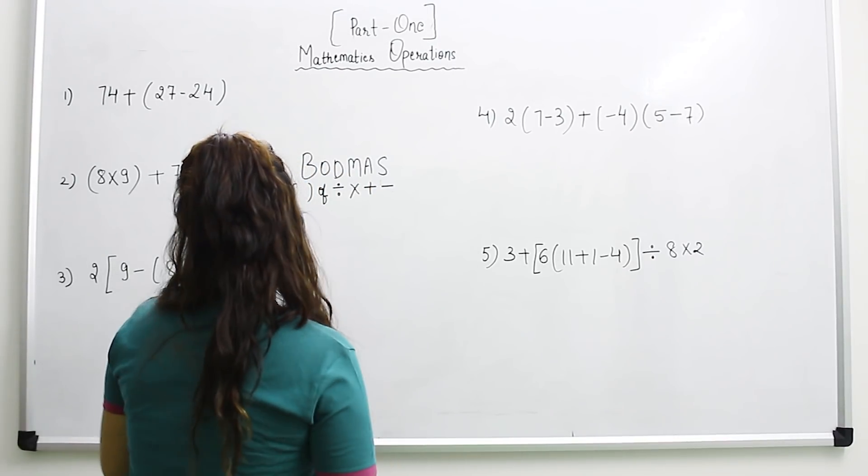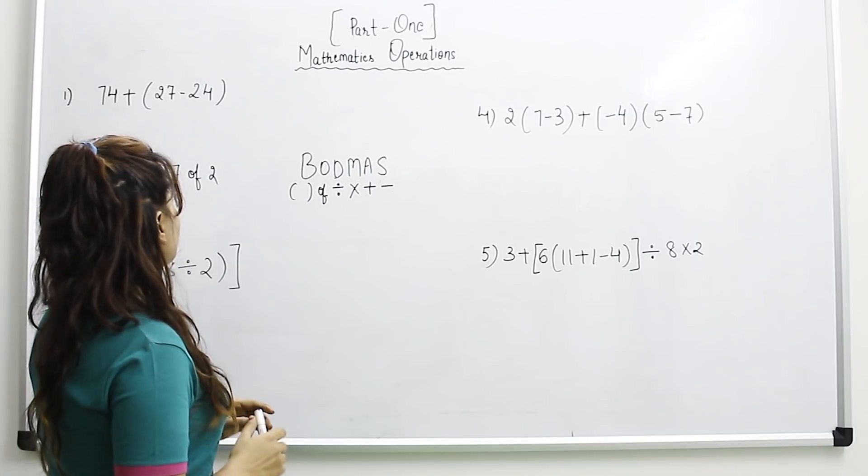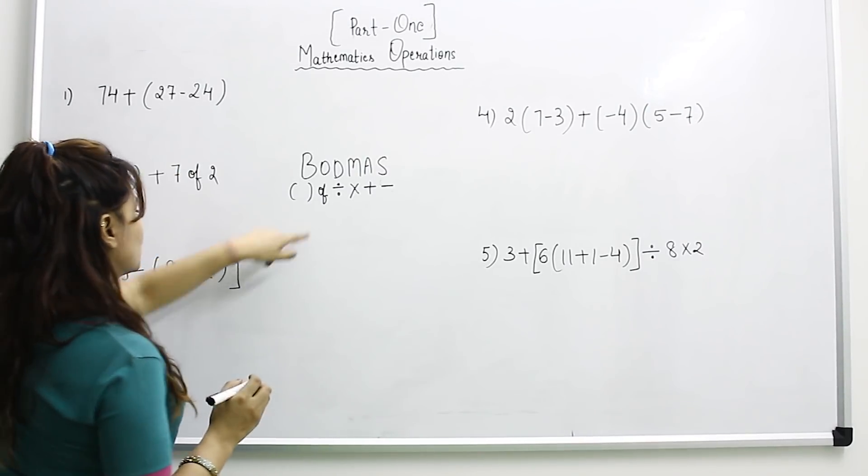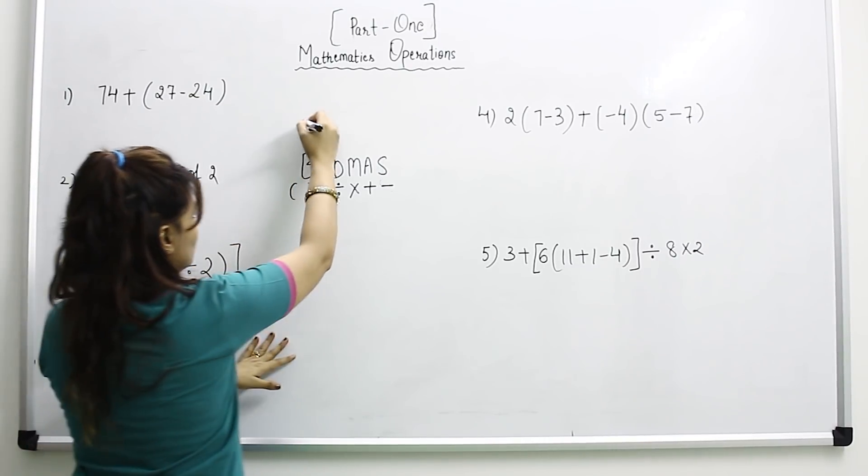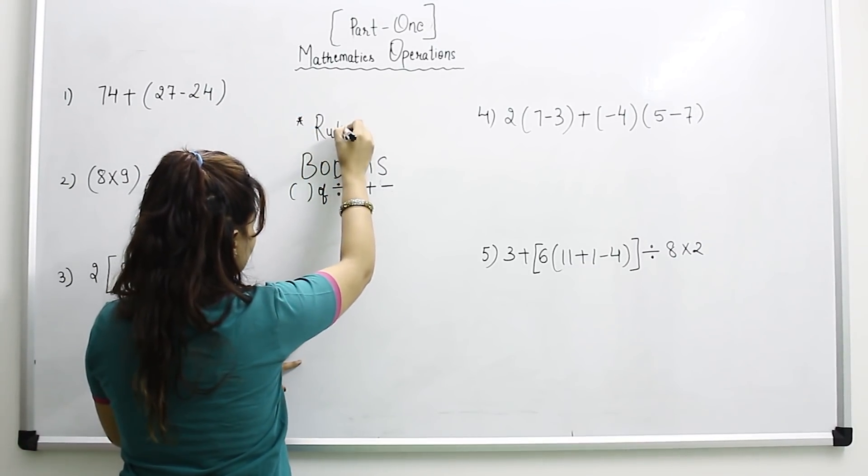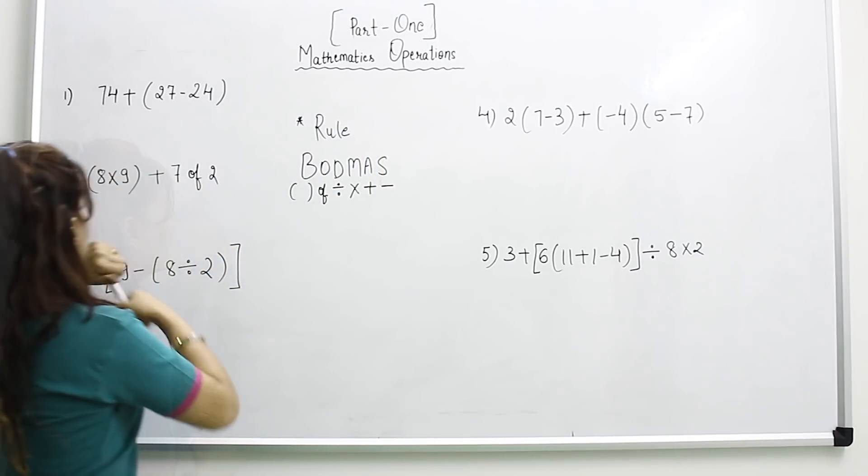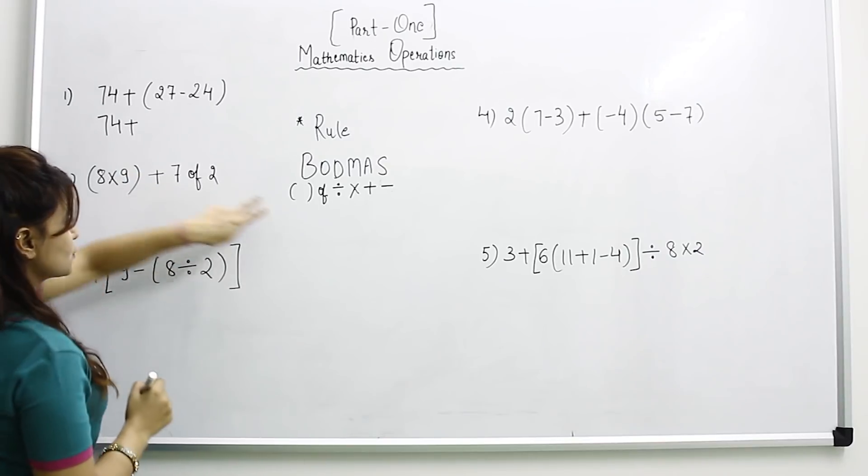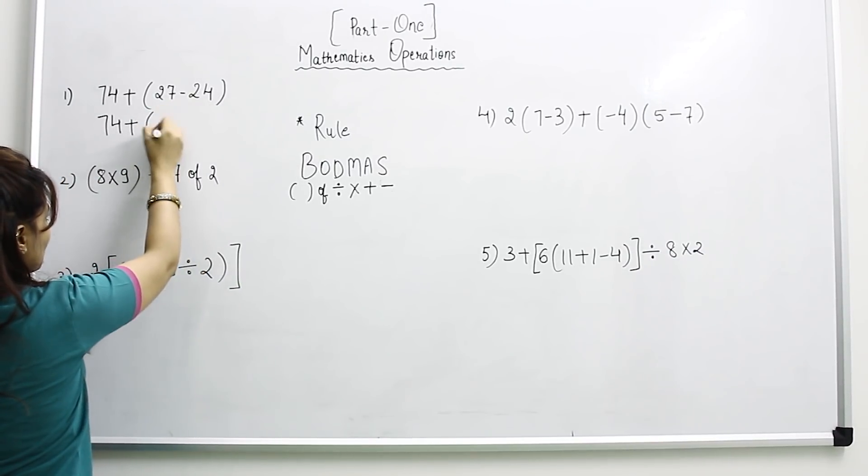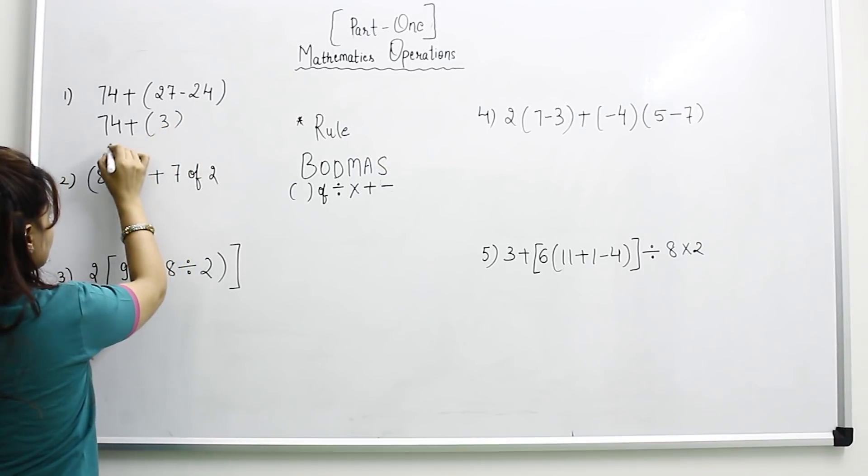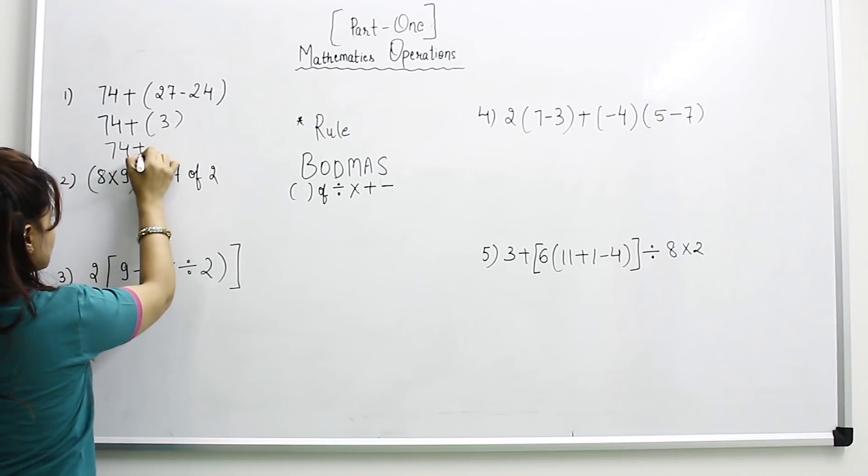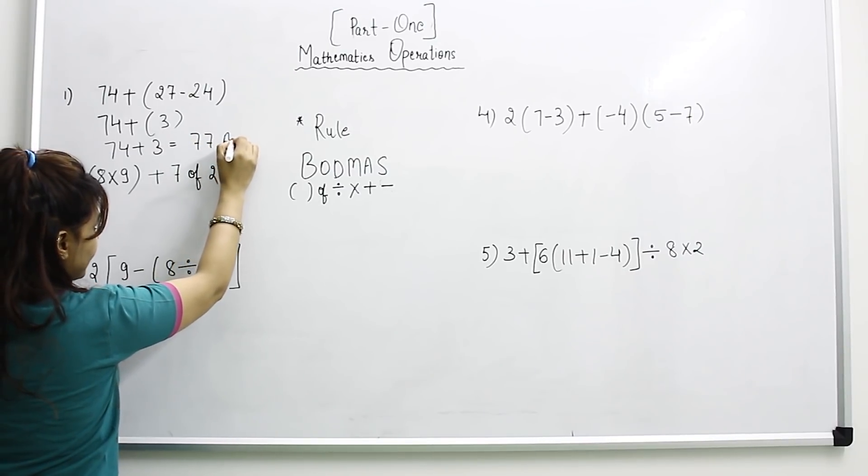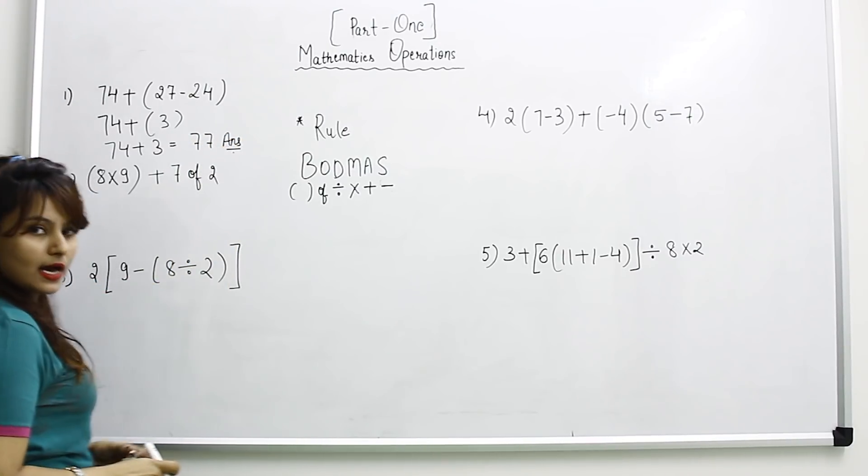So let's start with the first problem. First problem is 74 plus (27 minus 24). So as per the rule, first according to this trick we have to solve bracket. When we solve the bracket what we get? We get 3. So 74 plus 3 equals 77. This is the answer.